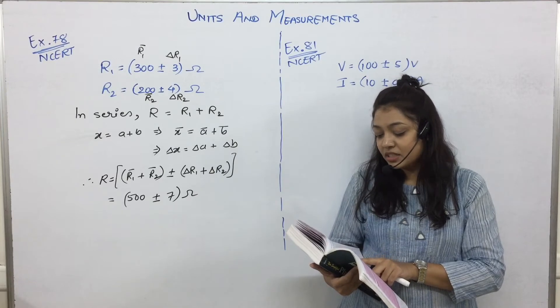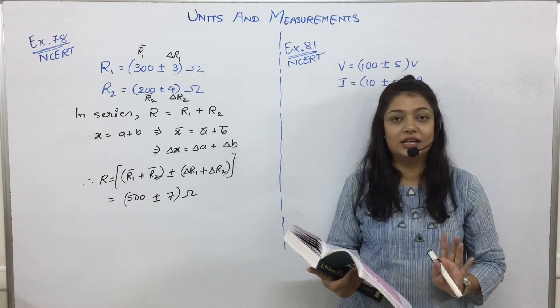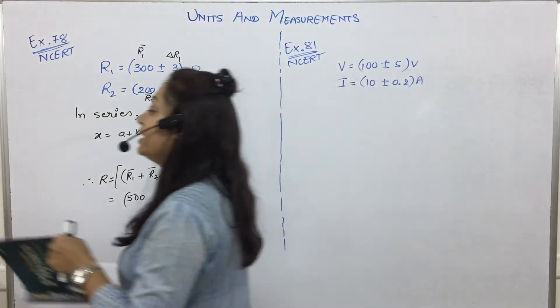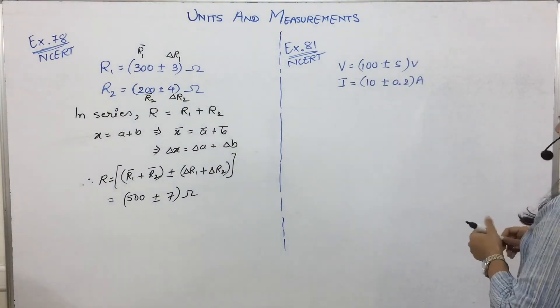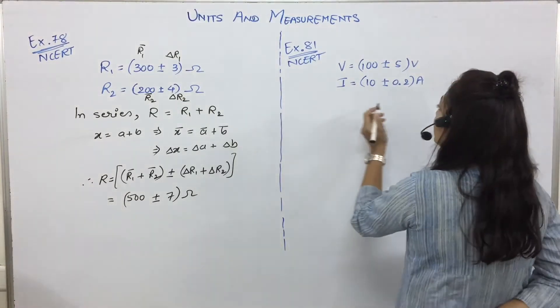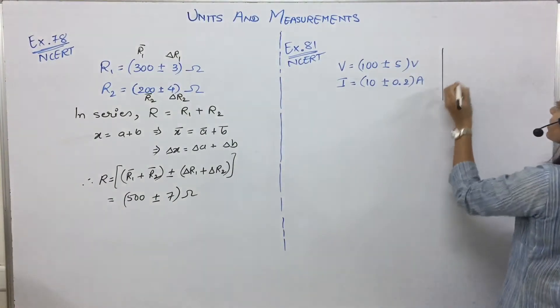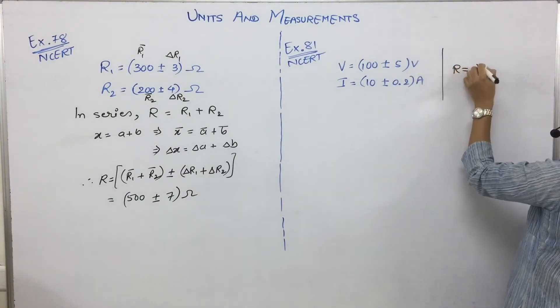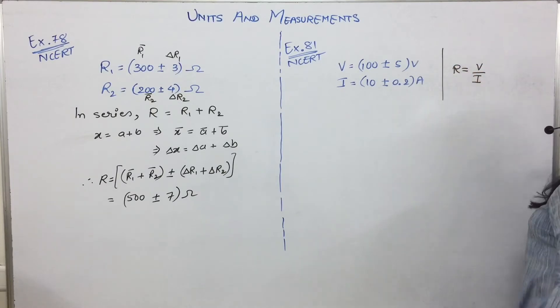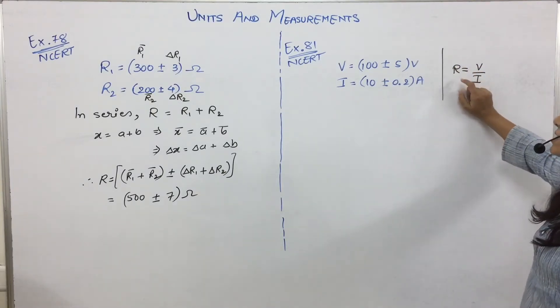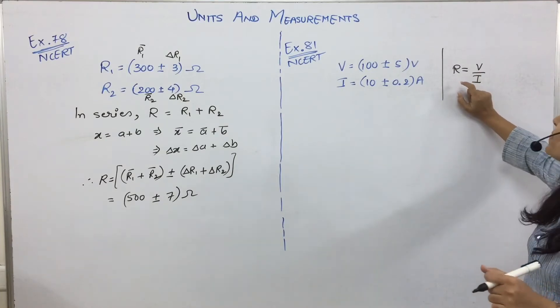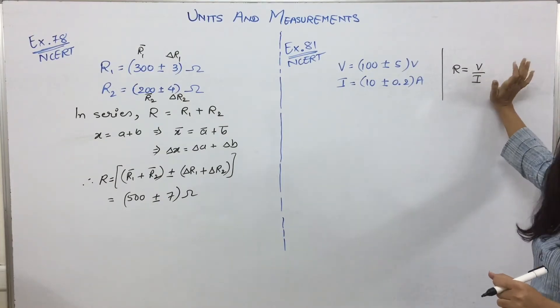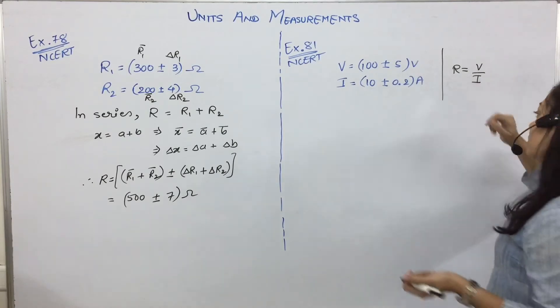Find the percentage error in R. The formula given to us is what? R is equal to V by I. This is resembling which formula that we have already done - division wala. X is equal to A by B, we have already done.